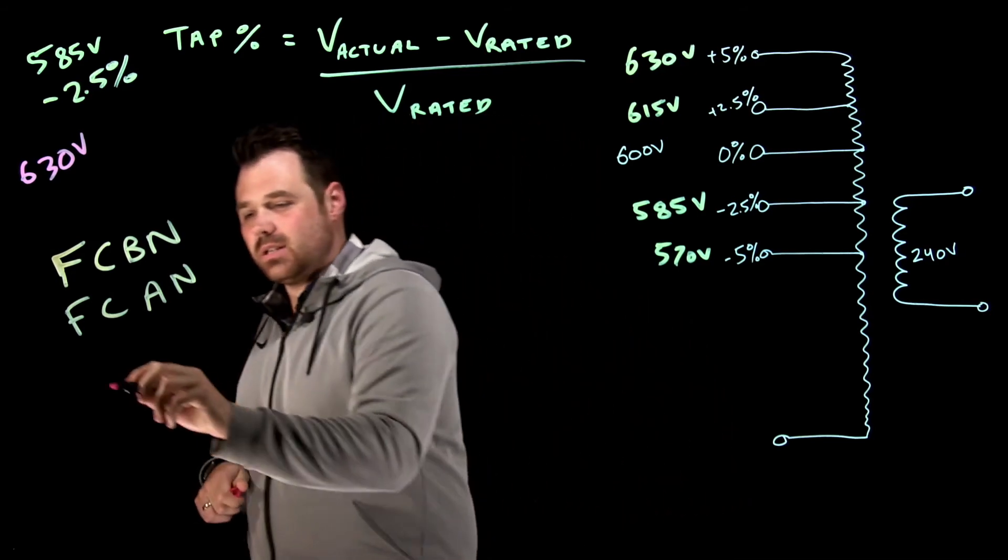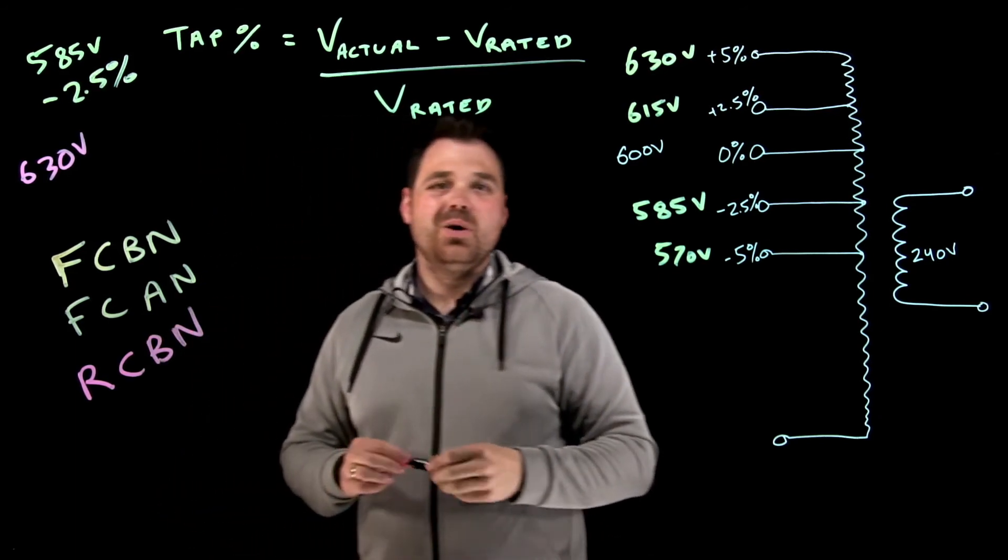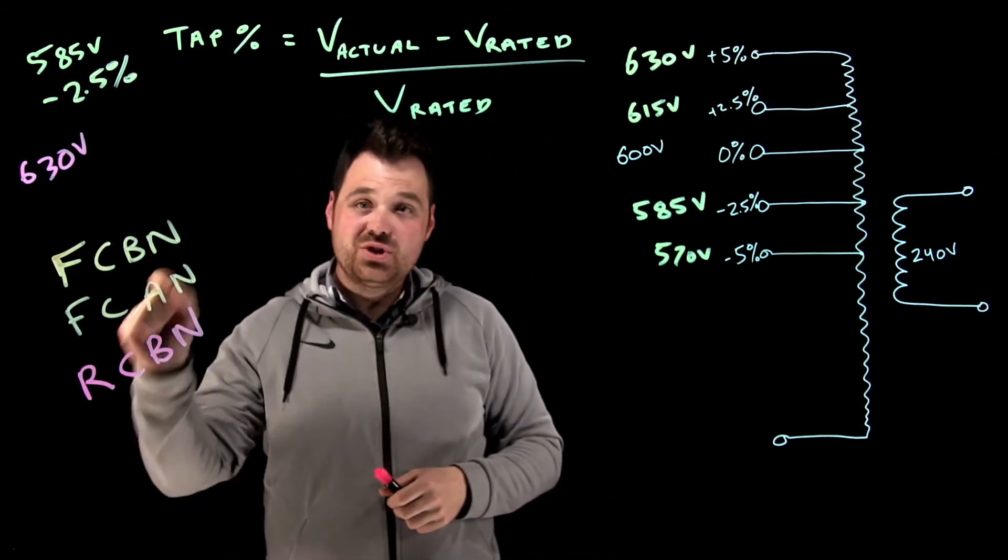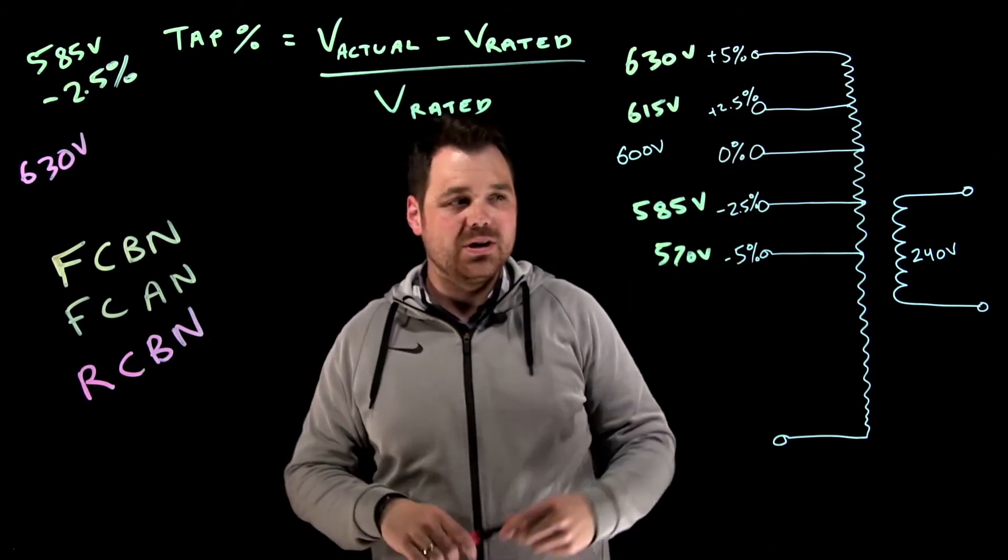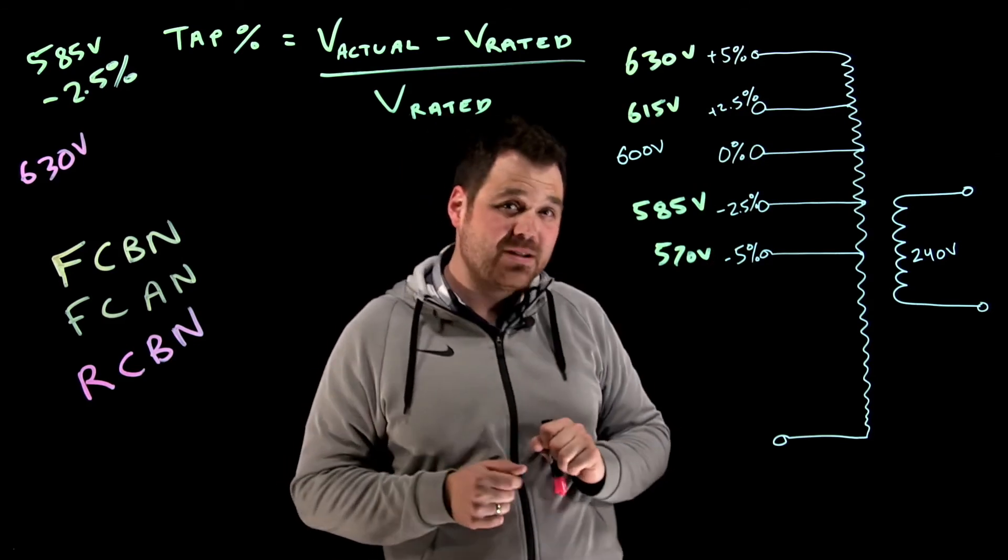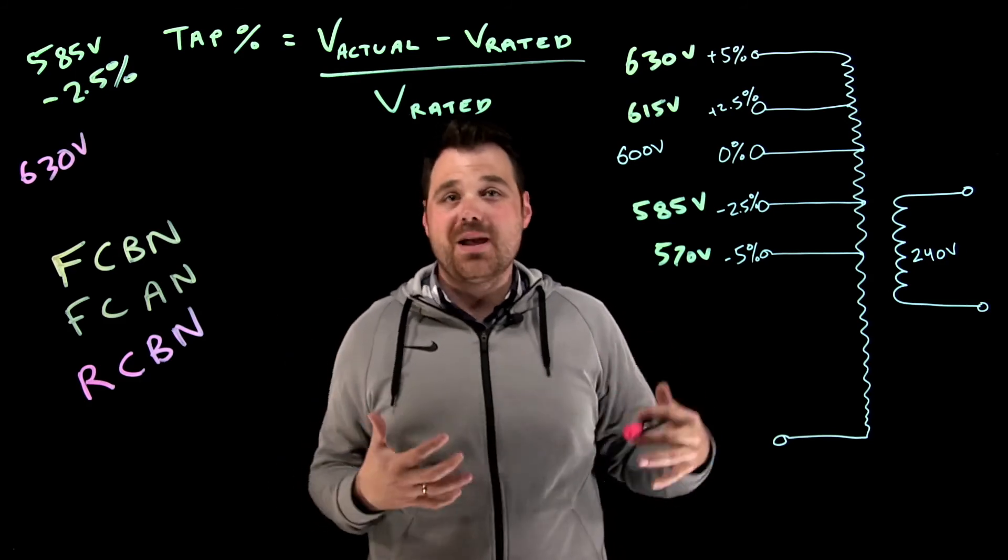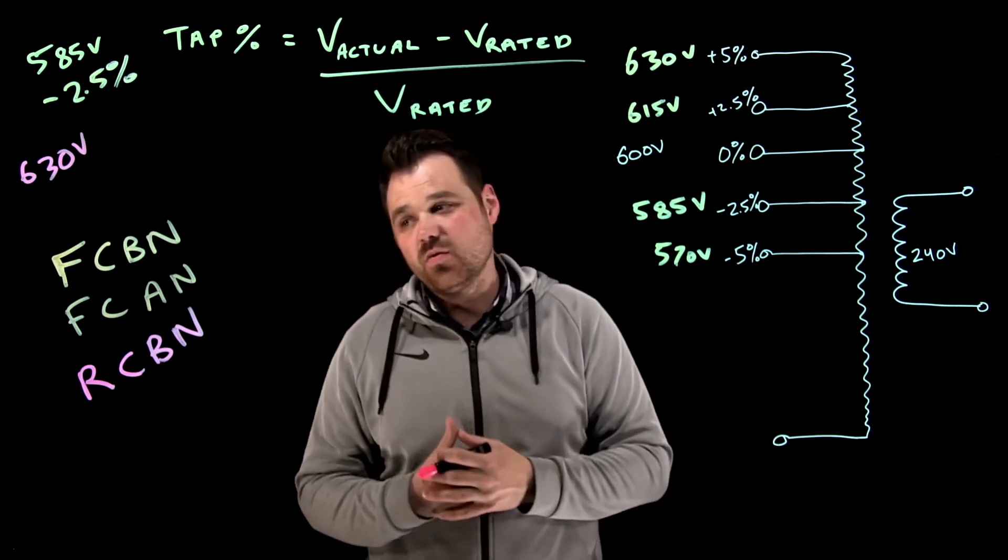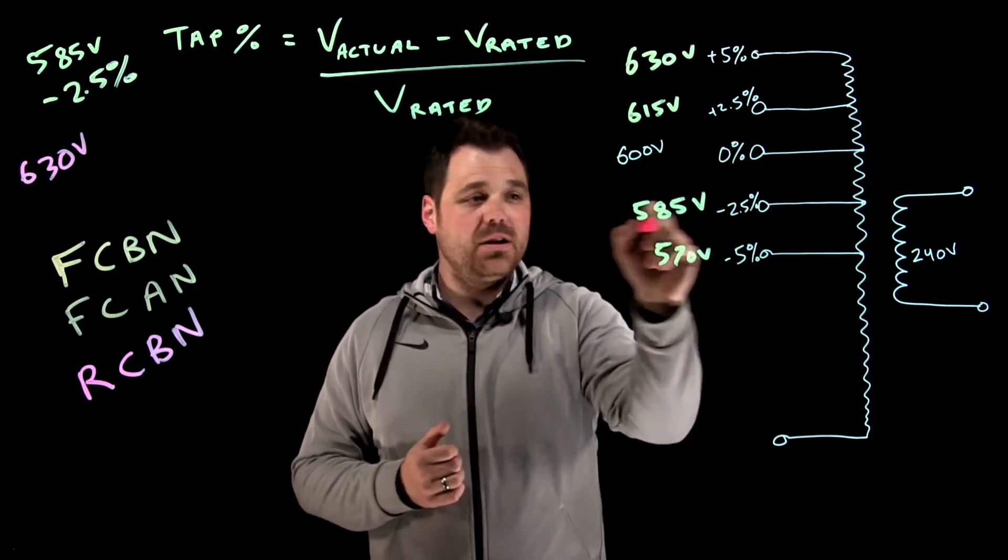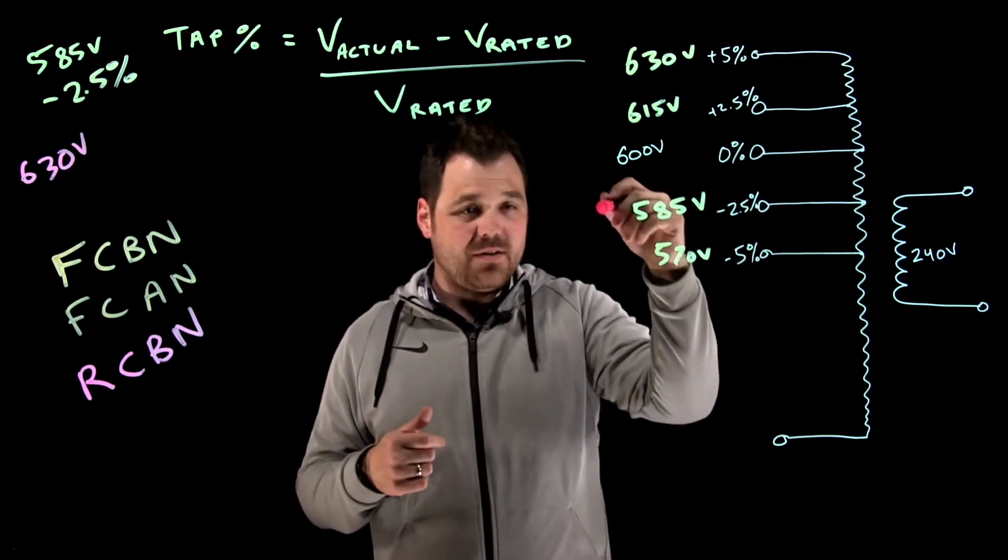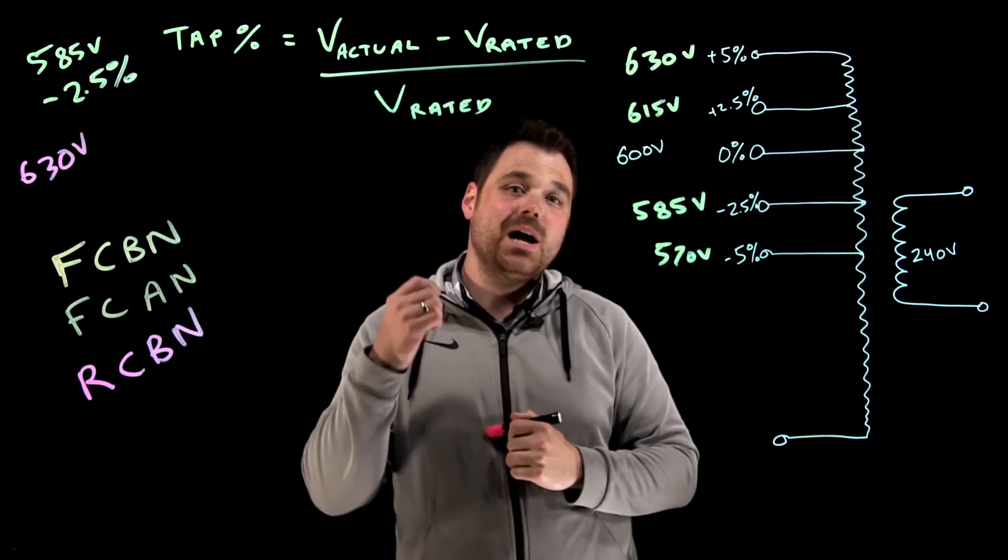What you want to watch out for is the label RCBN, which means it is going to be reduced capacity. If you use a tap reduced capacity below normal means if you apply a tap, your capacity changes accordingly. So that's just different way that they manufacture and that they rate that transformer. So reduced capacity below normal, if I dropped down to two and a half percent tap here, if I tap down to that 585 volt 2.5, my VA is also going to go down accordingly.